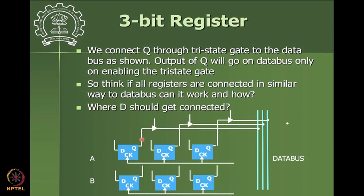We connect Q to the data bus through the tri-state gate. Whenever we want this value to be available on the data bus, we enable the tri-state gate pins — all connected together similar to how clock inputs are connected — and then all data values will be available on the respective lines of the data bus, transmitting data from a register to the data bus. Pause and think about how D should be connected before listening to the answer.